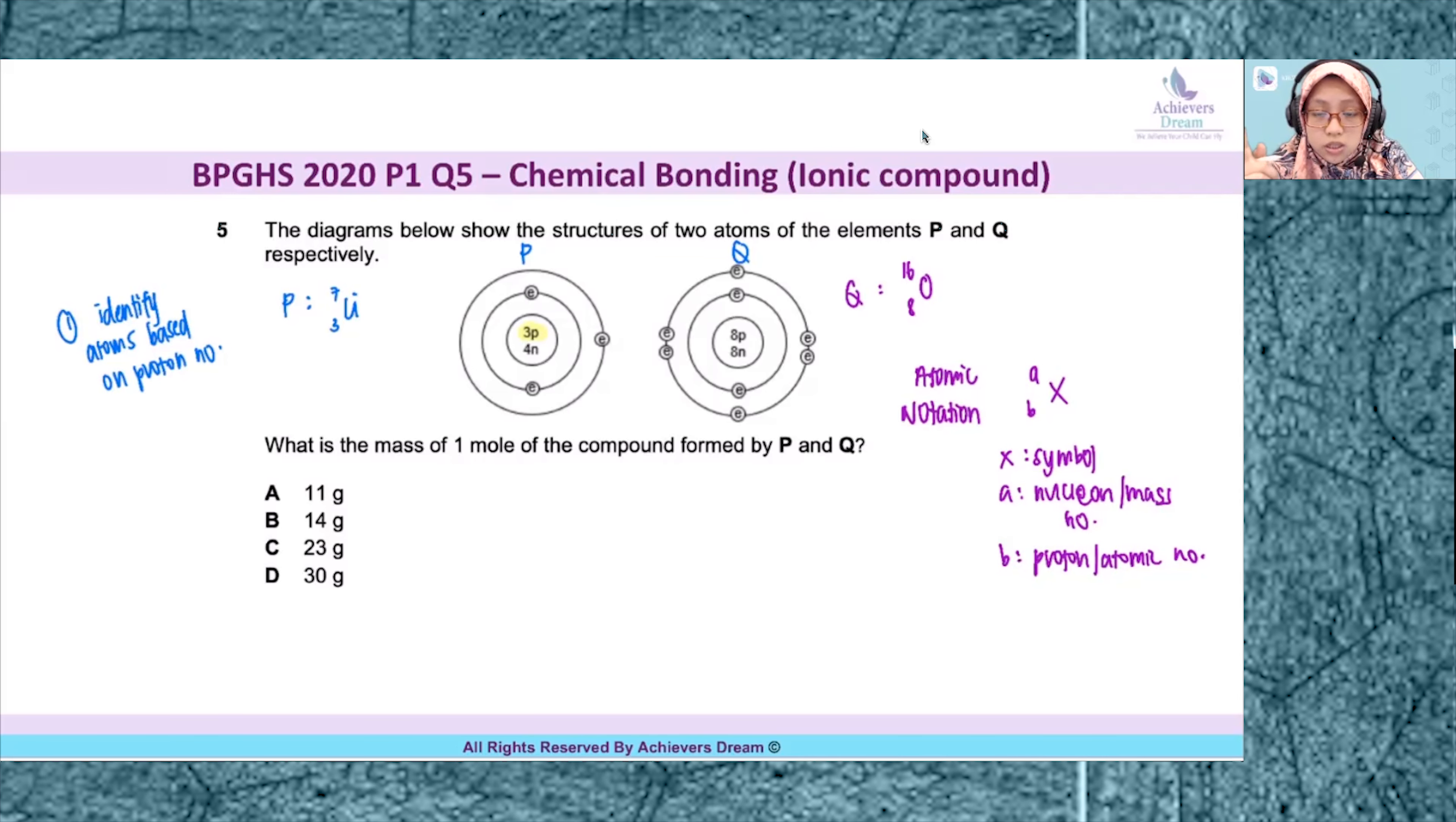All right, so now we have lithium and oxygen. So lithium atom, it has one valence electron, it is a group one element, alkali metal, it will lose one valence electron to form Li plus. Oxygen, on the other hand, it will gain two electrons to form O2 minus.